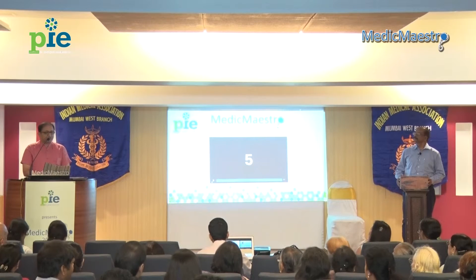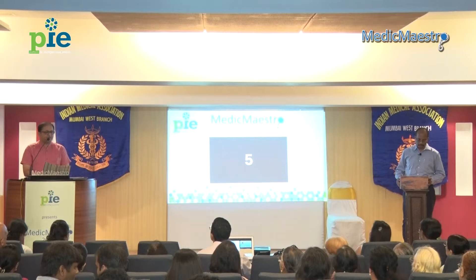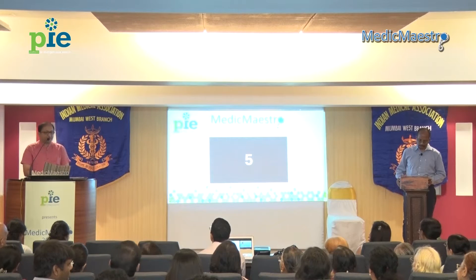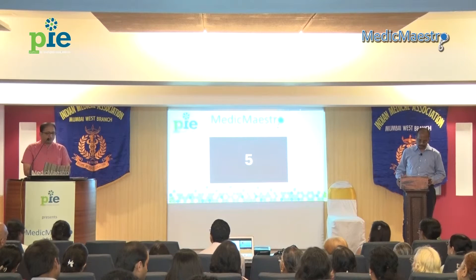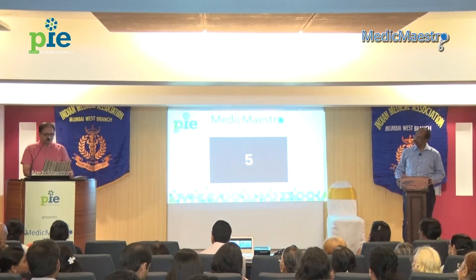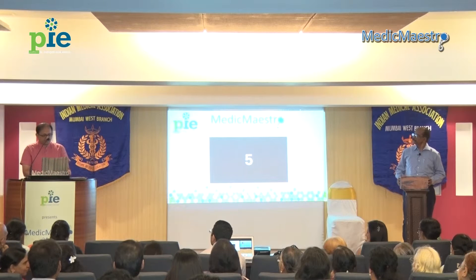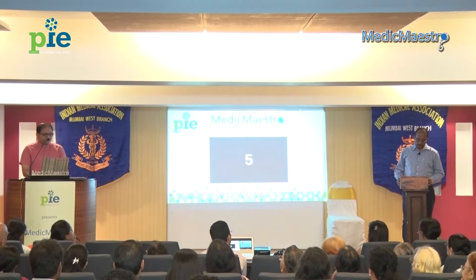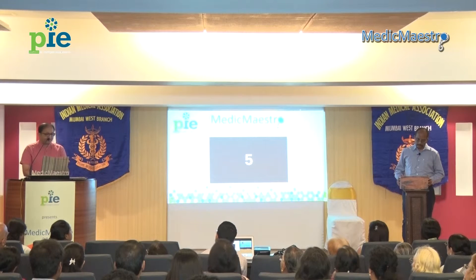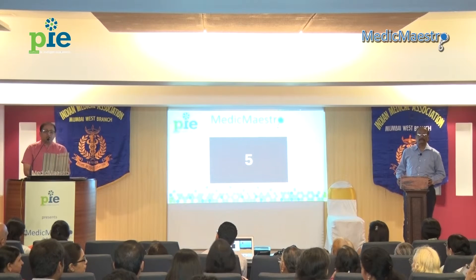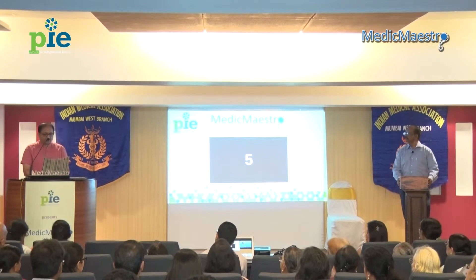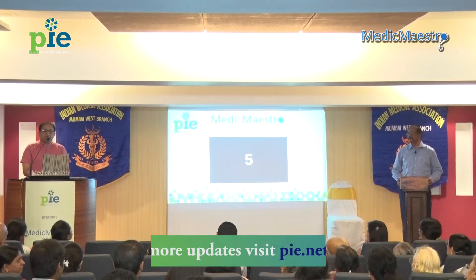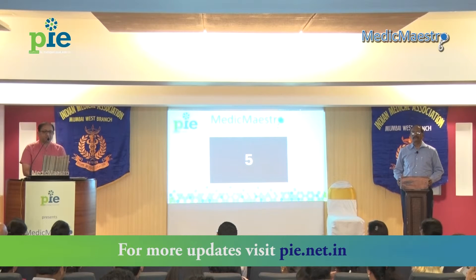Kumar, the question that you did not answer correctly: acid reflux can worsen asthma even if the acid does not reach the tracheobronchial tree. The disease of smooth muscle causing both solid and liquid dysphagia with chest pain relieved by sublingual sorbitrate is achalasia — he said esophageal spasm. The Valsalva manoeuvre worsens reflux esophagitis.